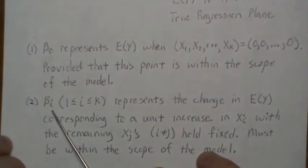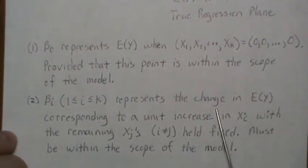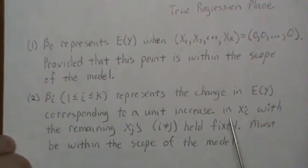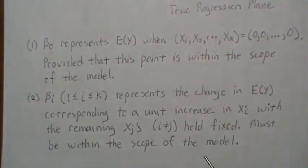Now, the beta parameters, so say beta i, which i goes from 1 to k, it represents the change in the average y corresponding to a unit increase in xi with the remaining x's held fixed. And again, this is only valid in the scope of the model.